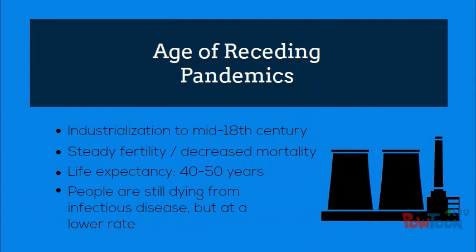The age of receding pandemics starts around the time of industrialization in the mid-18th century. This age is a time of steady fertility and a decrease in mortality. The average life expectancy increased because children were living into adulthood and public health initiatives became more common during this period. As a result, there is a shift from higher to lower epidemic disease mortality.